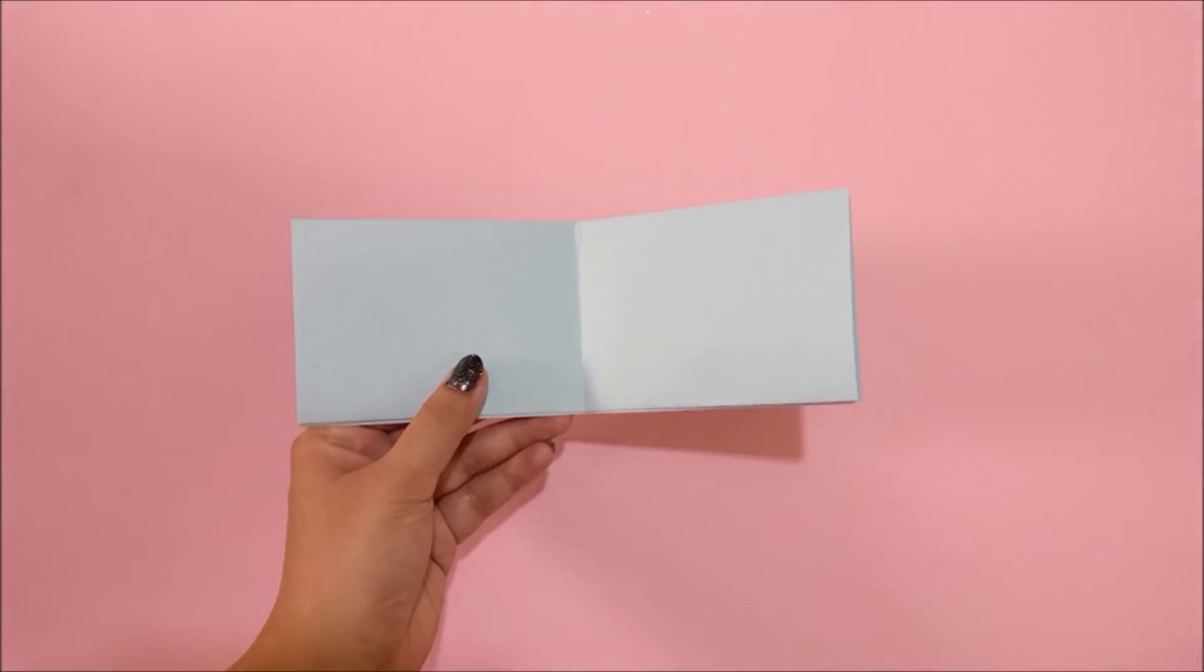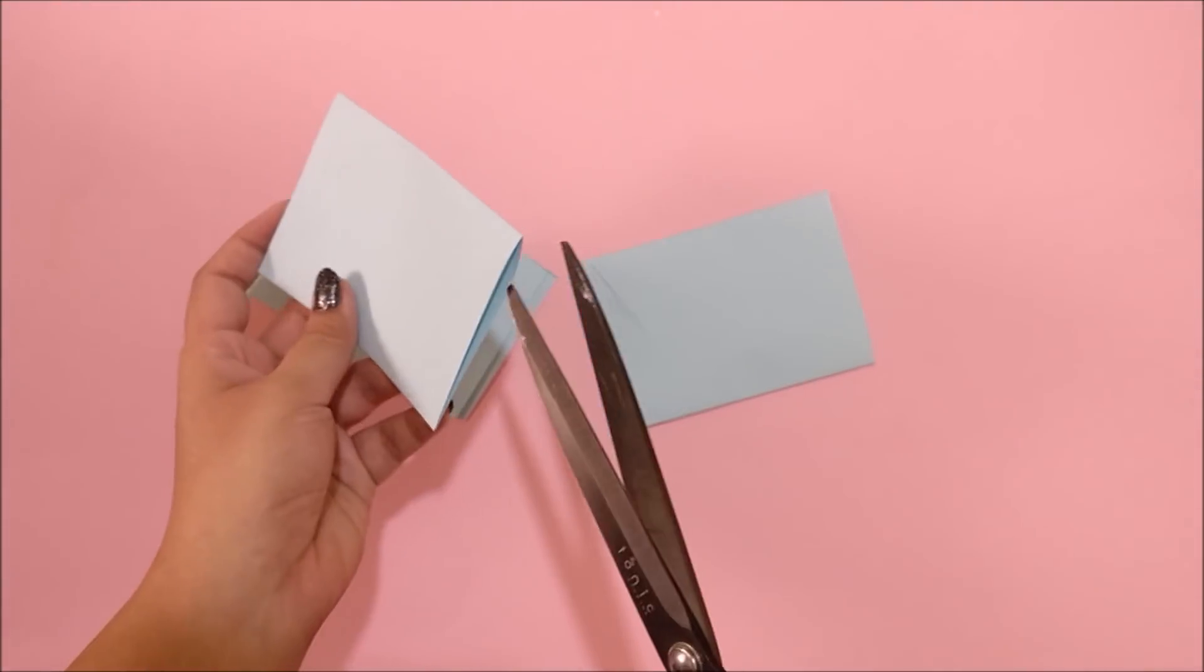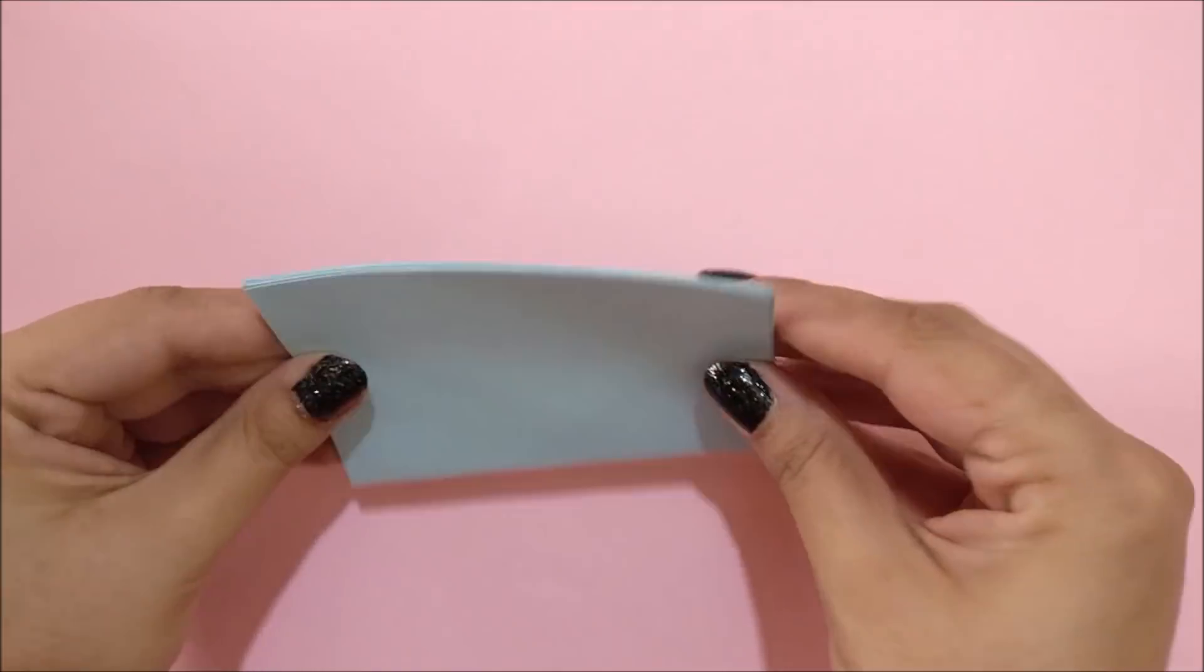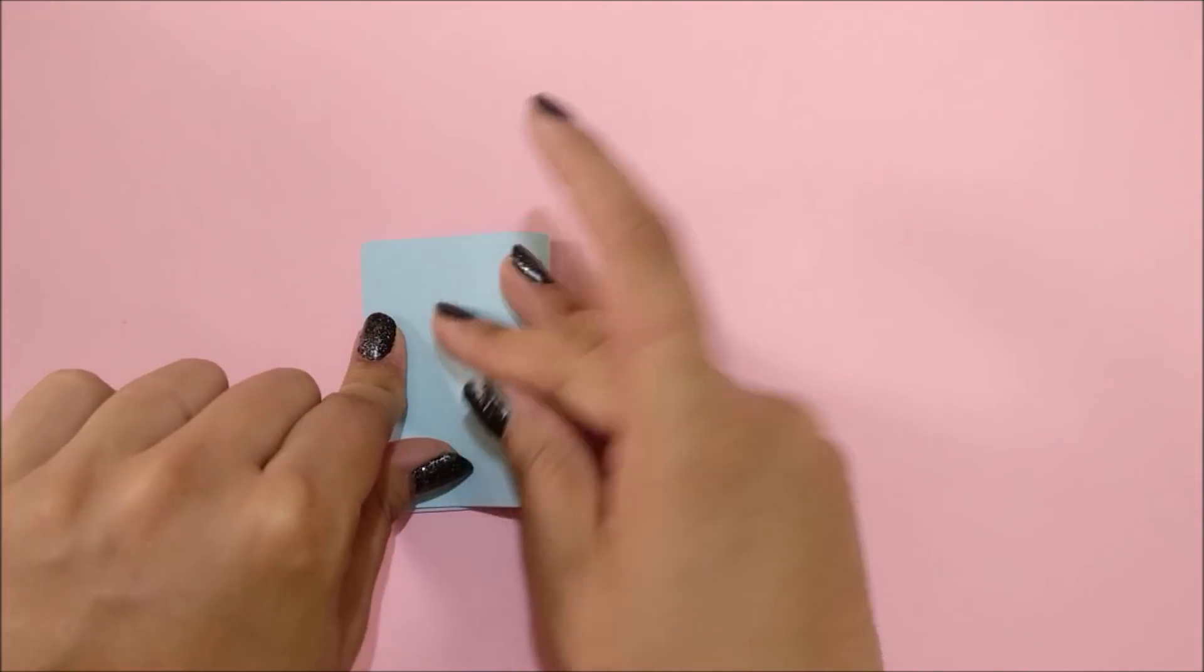Now take your scissor and cut on every fold line, aka crease line. After cutting, gather all the rectangles and tap them against a plain surface to make it nice and even, and then fold it in half to make pages.